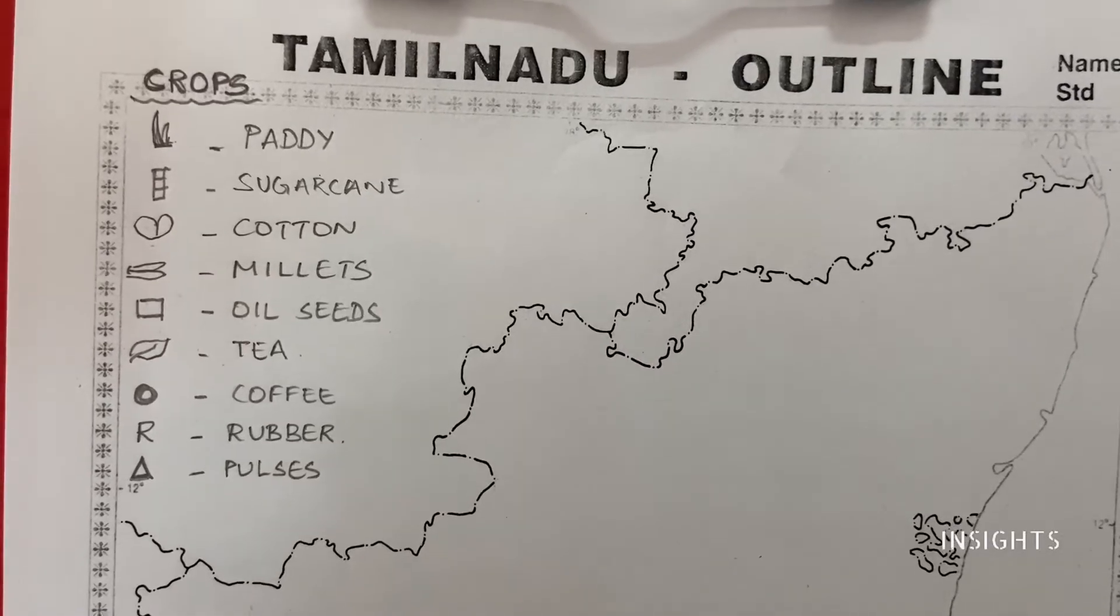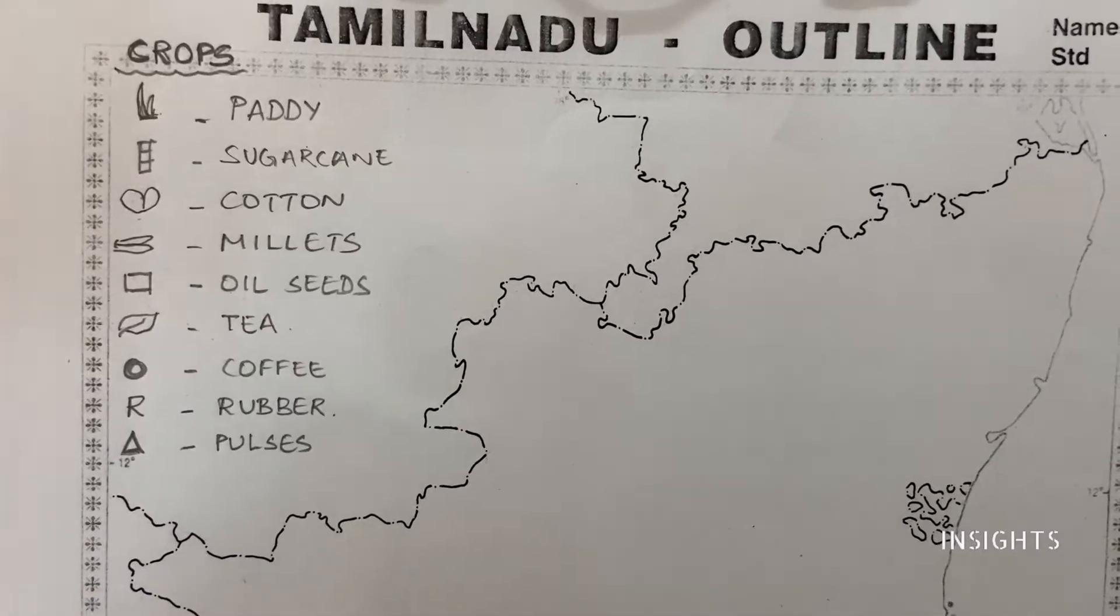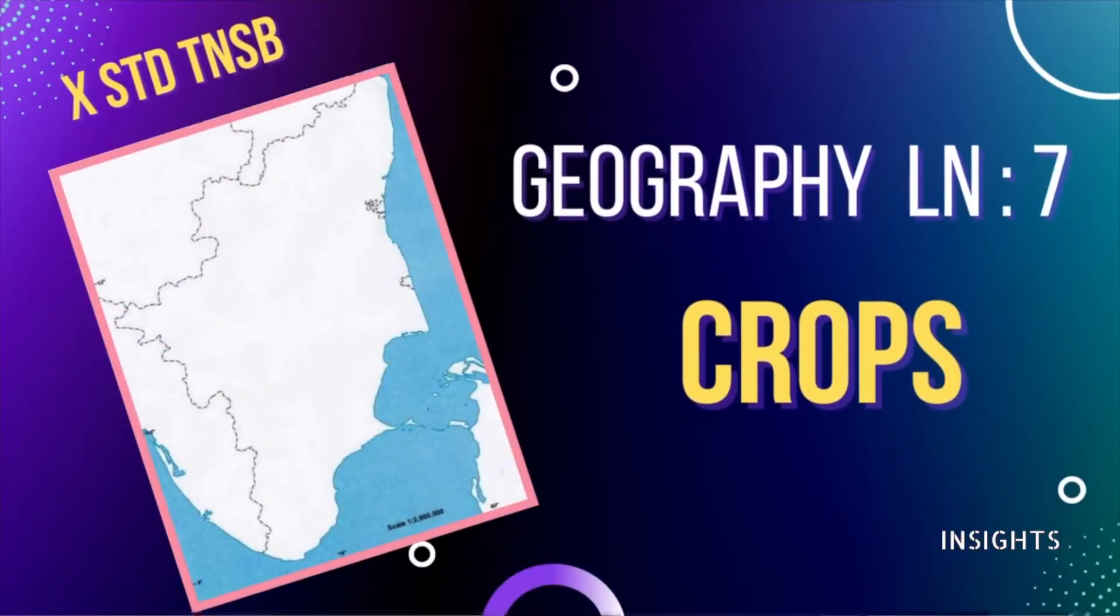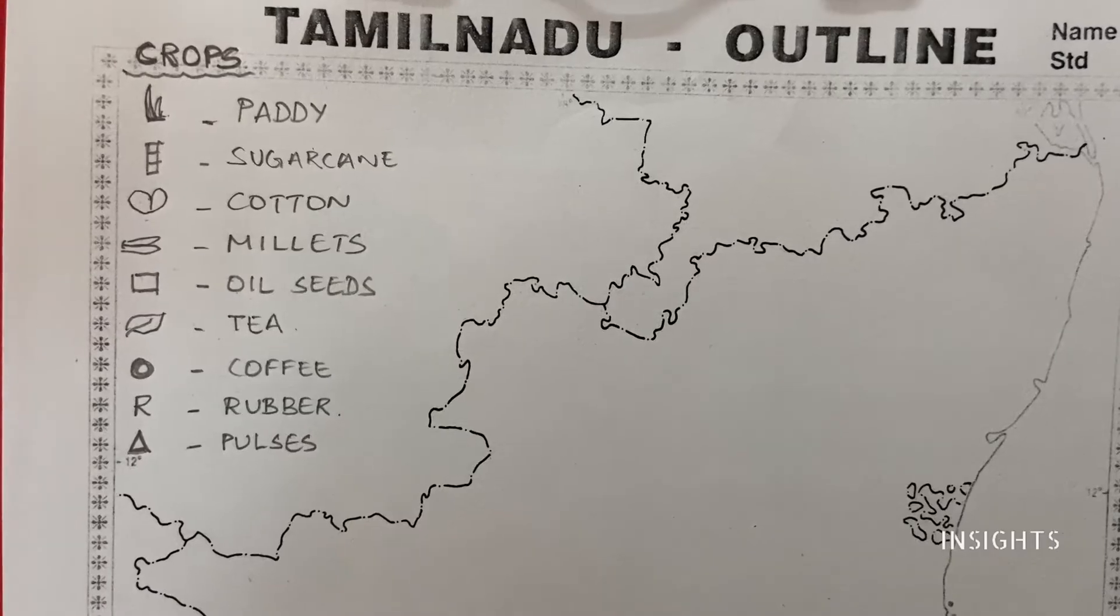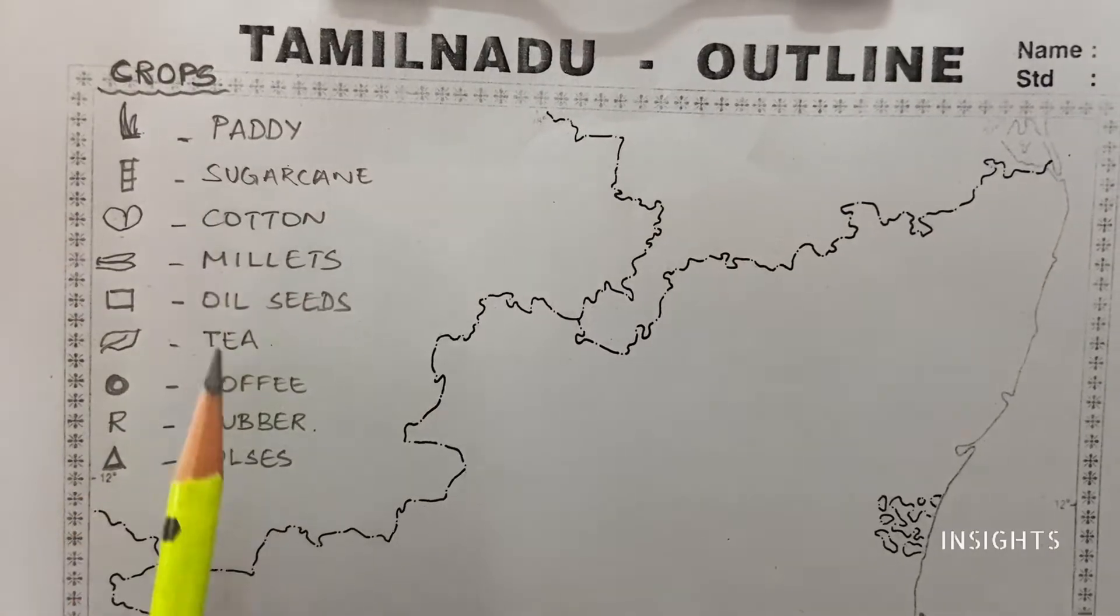Hello my dear students, today in this map you will know the important crops that are grown in Tamil Nadu. So first, you will know the symbols clearer, and let us go in this order.